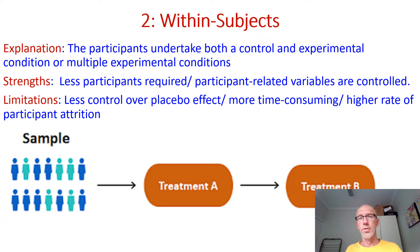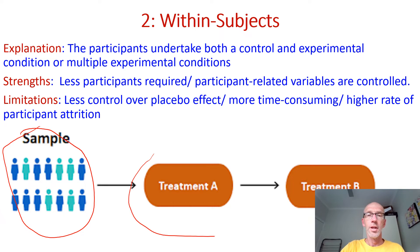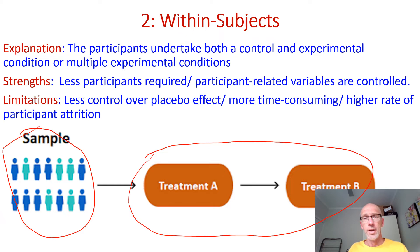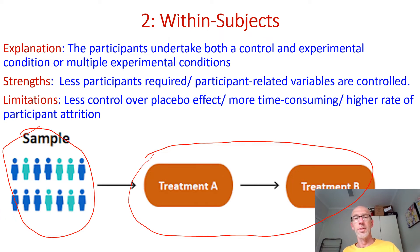The second option is the within-subjects design, where our sample of participants is exposed to all experimental and control conditions. The advantage is that the participant-related variables we discussed in the between-subjects design have been controlled — we don't have to worry about inferior memory for participants in treatment A versus treatment B, because the same participants are exposed to all levels of treatment. However, if expectations vary between the two treatments, this can have a confounding effect on our results, and it will potentially take twice as long and therefore have a cost effect.